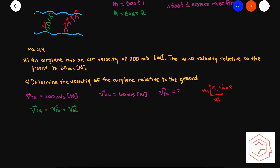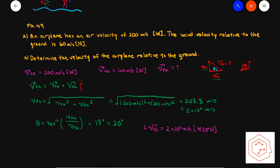Drawing a quick sketch, you'll note it's a right-angle triangle, so we use the Pythagorean theorem, letting north and west be positive. The speed of the plane relative to the ground works out to 208.8 meters per second, which rounds to 2 × 10² m/s with one sig fig. For the angle, tan is opposite over adjacent, giving inverse tan of V_ag over V_pa, which is 17 degrees — rounding to 20 degrees. So the final answer is 2 × 10² m/s, west 20 degrees north.